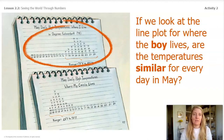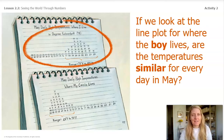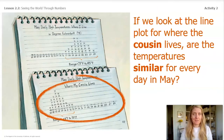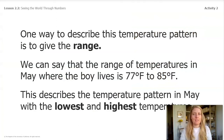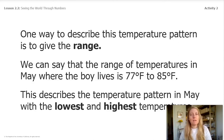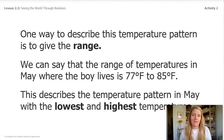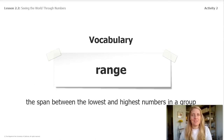If we look at the line plot for where the boy lives, are the temperatures similar for every day in May? Hopefully you said yes, because a pattern is something you observe to be similar over and over again. If we look at the line plot for where the boy's cousin lives, are the temperatures similar for every day in May? One way to describe this temperature pattern is to give the range. The range of temperatures in May where the boy lives is 77 degrees to 85 degrees Fahrenheit. The range of temperatures where the boy's cousin lives was 65 degrees to 73 degrees Fahrenheit. Range is the span between the lowest and highest numbers in a group. The range describes one kind of pattern that helps meteorologists make predictions about the weather.